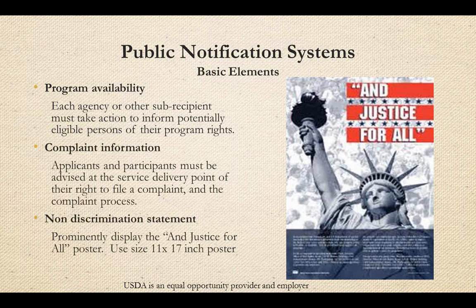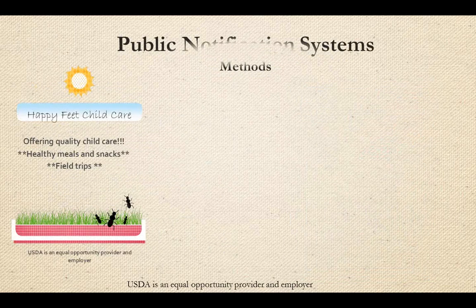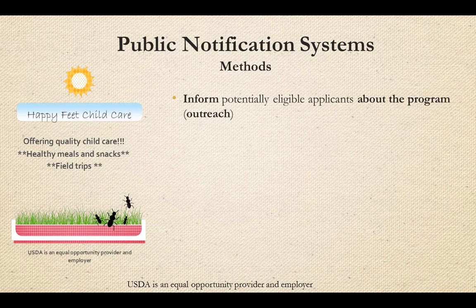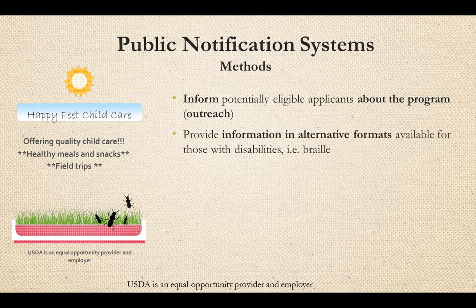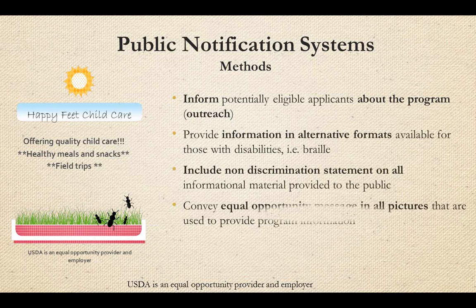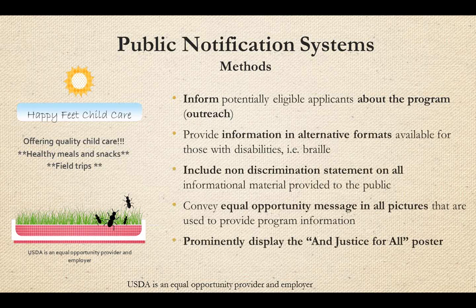Please make sure you're displaying the correct non-discrimination poster. The correct poster has a date of December 1999 in the bottom right corner. Compliance with public notification systems includes providing information in other formats for those with disabilities. An example of this may be providing large print or braille menus for those who are visually impaired. Non-discrimination statements must be included on all media mentioning USDA-funded child nutrition programs, including menus, flyers, internet pages, and other food-related program announcements.